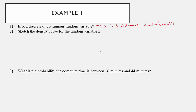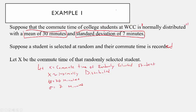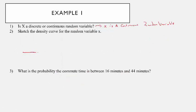Let's sketch the density curve for this random variable X. Since it is normally distributed, the density curve is going to follow a bell-shaped distribution. It's going to be centered at the mean, which is 30. Then we add standard deviations: going up, we get 37, 44, and 51. Going down, subtracting 7 each time, we get 23, 16, and 9.